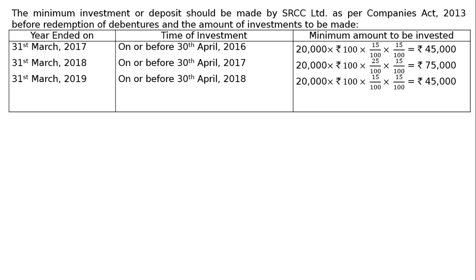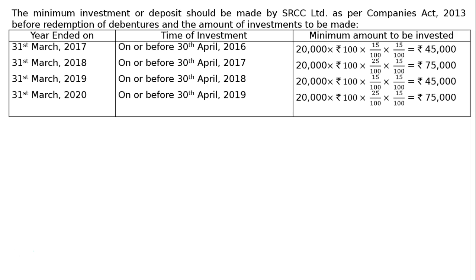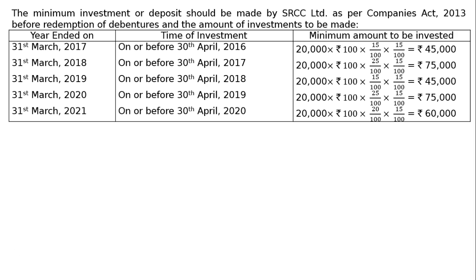For the year ended 31st March 2019, the investment is to be made on or before 30th April 2018. The calculation is again based on 20,000 debentures of Rs. 100 each, resulting in an investment of Rs. 75,000 and Rs. 25,000 respectively.